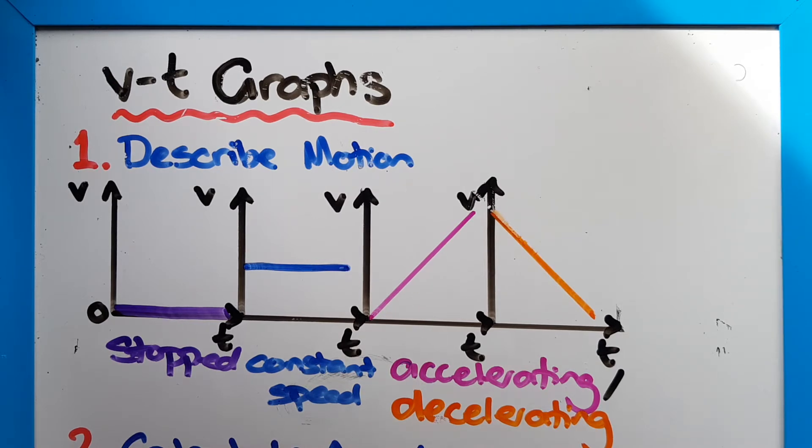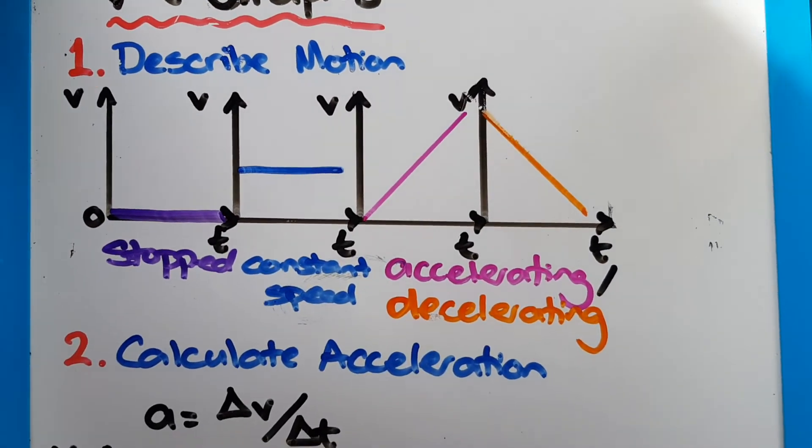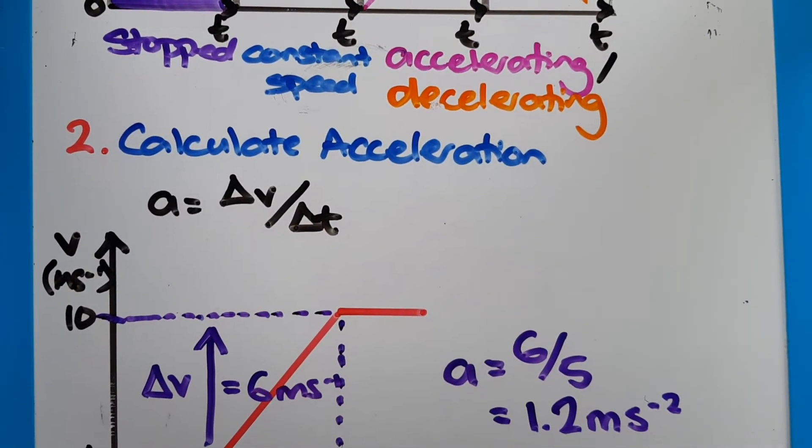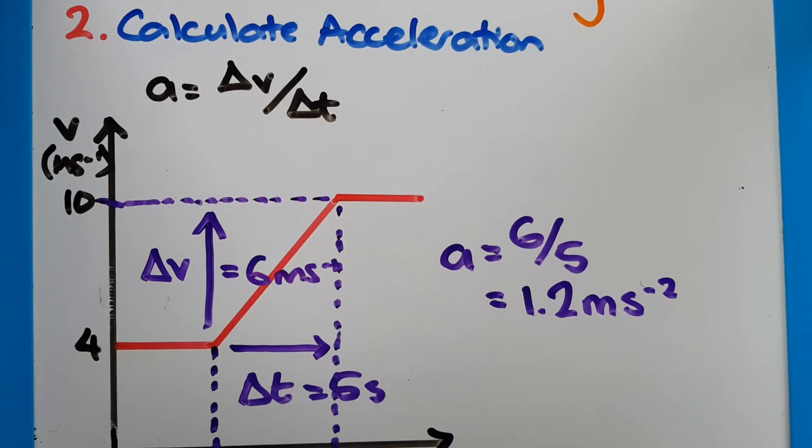So once we can describe the motion, we then have to be able to do some calculations with that motion. The most simple one to do is to calculate the acceleration. And acceleration is the change in speed over the change in time.